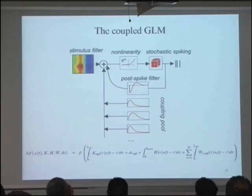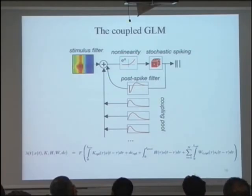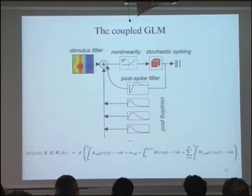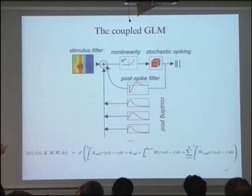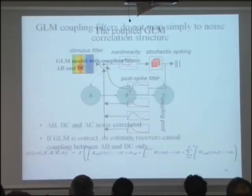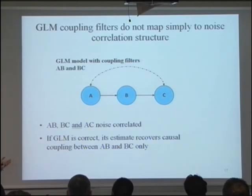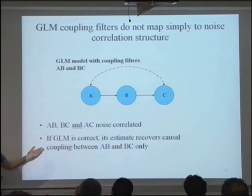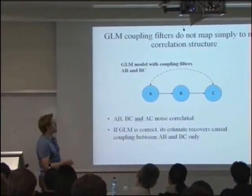I introduced coupling filters — filters convolved with the spike trains of neurons recorded simultaneously. The question is whether adding them improves our prediction of a given neuron's spiking. The coupling filters are not necessarily equivalent to the noise correlation structure: for example, a GLM with coupling between A-B and B-C would make A and C noise-correlated, but would not necessarily recover a coupling filter between A and C directly. So this is not just the same analysis as the noise correlations.